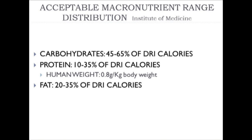Fat levels should be between 20 to 35% of DRI calories. The higher level of 35% — much higher than the 1977 guidelines of 30% — is consistent with higher energy expenditure seen in extreme sports and marathon running. A dietitian is best equipped to guide an individual at these higher fat levels, ensuring that the fats in question are of good quality.